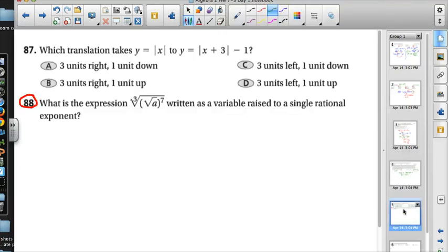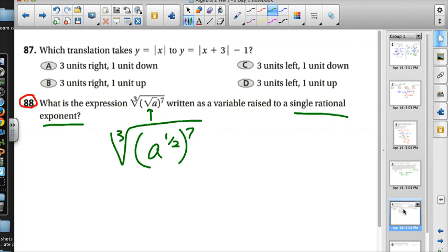Number 88 says, what's the expression the cubed root of the quantity the square root of a to the 7th, written as a variable raised to a single rational exponent. With parentheses, you always start at the innermost parentheses and work your way out. So I have a square root of a, and that's the same thing as a to the 1 half. So now I have a to the 1 half to the 7th power. And as I continue to work my way out, cubed root is to the 1 third power.